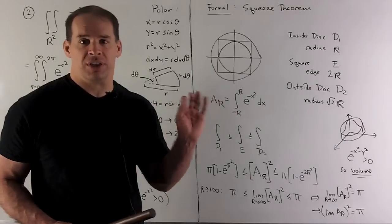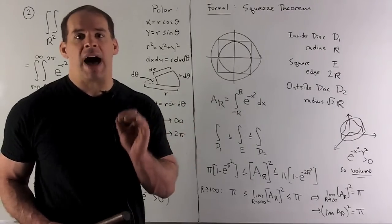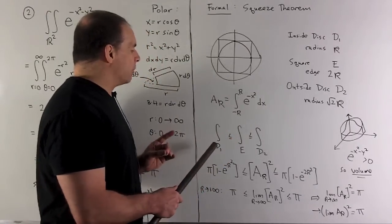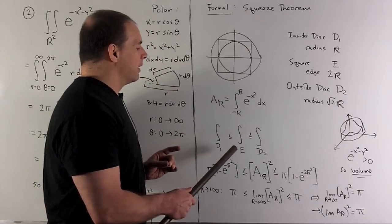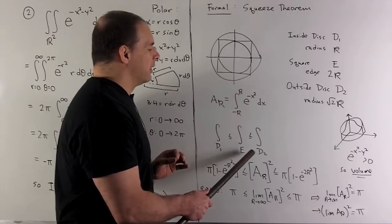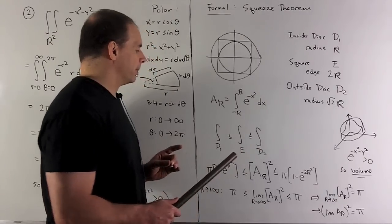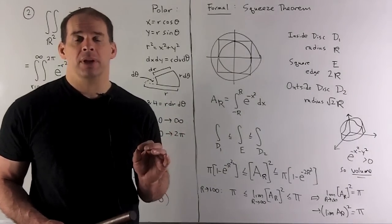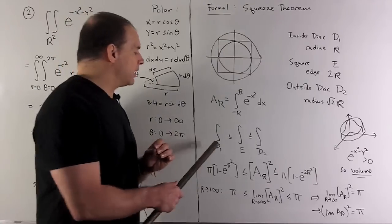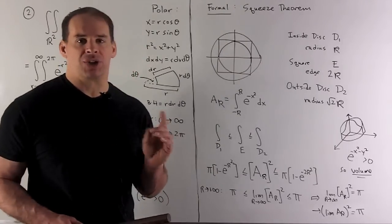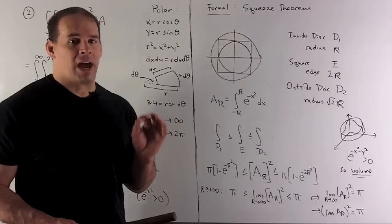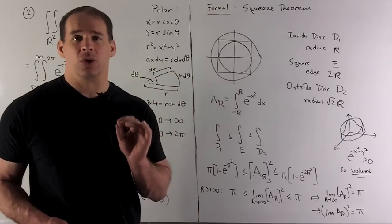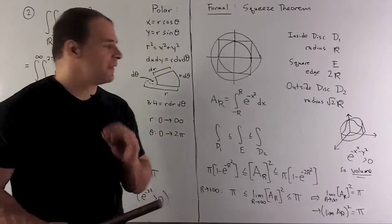We integrate our function over each region. Since we're looking at volumes and the regions are nested, the volume above D₁ is ≤ the volume above our square, which is ≤ the volume above the big disk. We can compute each by going through the steps in the informal argument. The volume above our small disk is π(1 - e^(-r²)), the volume of our big disk is π(1 - e^(-2r²)).